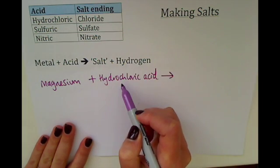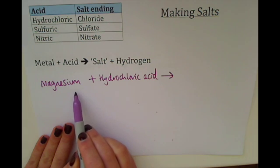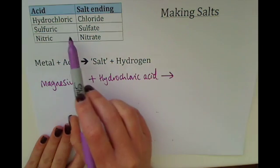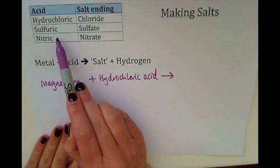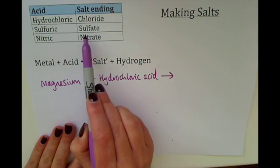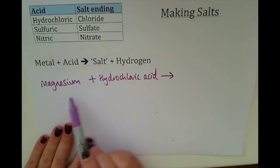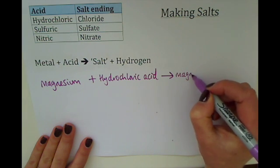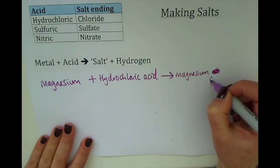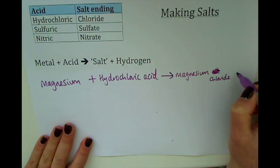The salts are actually really easy to name. All you do is write the name of the metal and then follow this rule: if it's hydrochloric acid, write chloride; if it's sulfuric acid, write sulfate; if it's nitric acid, write nitrate. So here we would write magnesium chloride plus hydrogen.